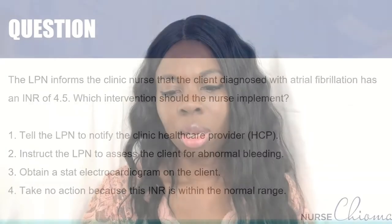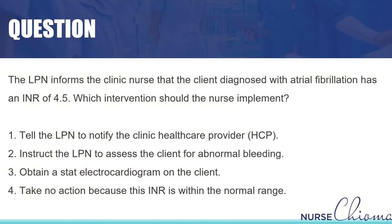Here's what the question says. The LPN informs the clinic nurse that the client diagnosed with atrial fibrillation has an INR of 4.5. Which intervention should the nurse implement?